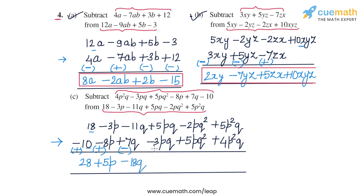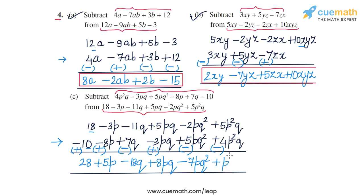Then minus 3pq will become plus 3pq, so we have 5pq plus 3pq which is 8pq. Then plus 5pq² will become minus 5pq², so we have minus 2pq² minus 5pq² which is minus 7pq². And finally, plus 4p²q will become minus 4p²q, so we have 5p²q minus 4p²q which is p²q.